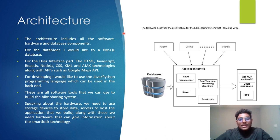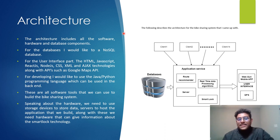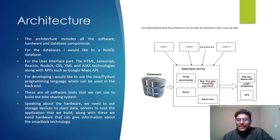Speaking about hardware, it stores data, and hardware can give information through smart lock technology. You need storage devices to store data in the application. This diagram shows clients connecting to an application server, databases, a route recommendation server, smart lock, and real-time data processing. An algorithm is connected to a web and mobile app user interface with GPS.